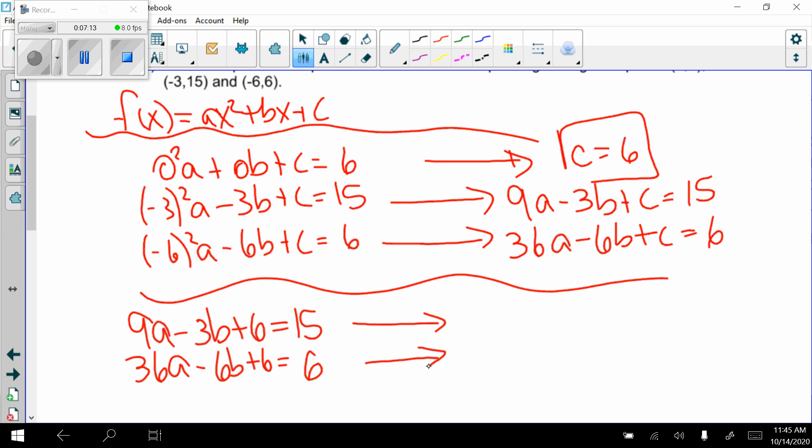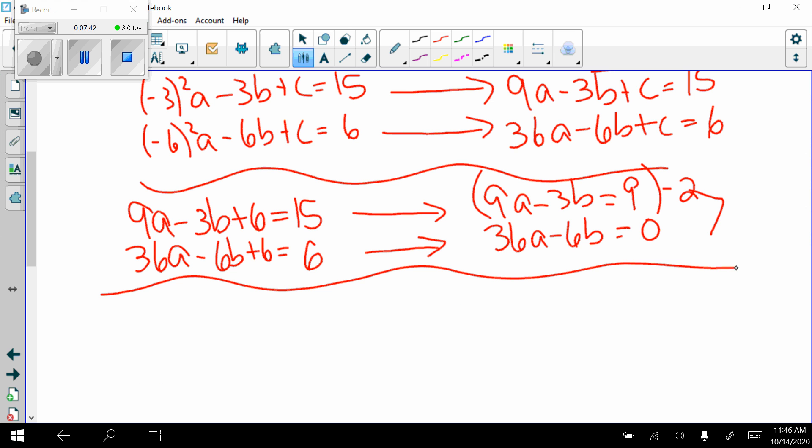So this equation gives me 9a minus 3b plus c equals 15. This one gives me 36a minus 6b plus c equals 6. I already know that c equals 6, so I can plug that into both of those equations. So 9a minus 3b plus 6 equals 15. 36a minus 6b plus 6 equals 6. Set each of these equal to 0. I'll get the a and b by itself. So here I get 9a minus 3b equals 9. 36a minus 6b equals 0.